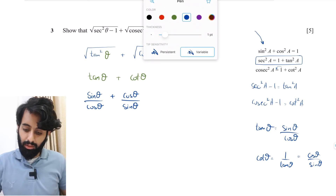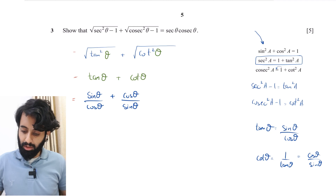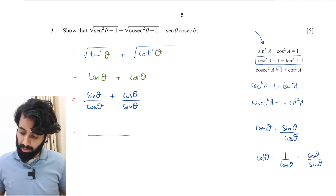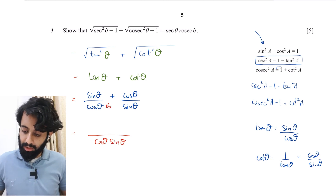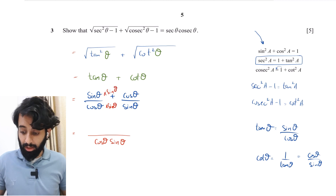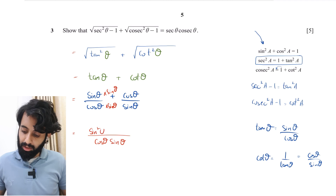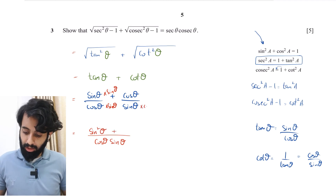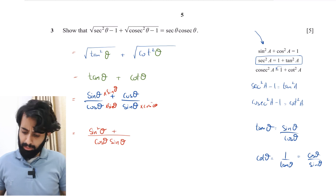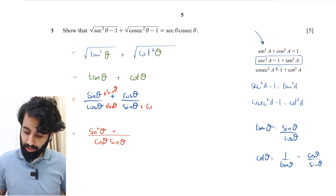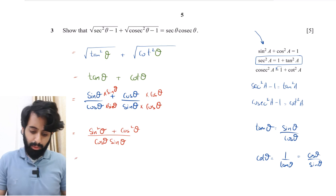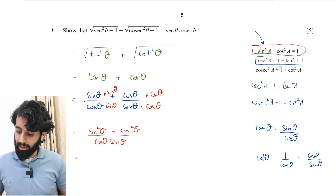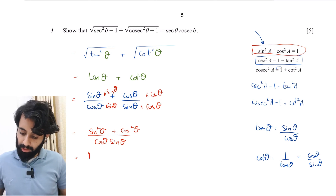Now I'll take the LCM of cos θ and sin θ, which is cos θ · sin θ. Multiplying through: the first fraction gets multiplied by sin θ giving sin²θ, and the second gets multiplied by cos θ giving cos²θ. So we have (sin²θ + cos²θ) / (cos θ · sin θ).